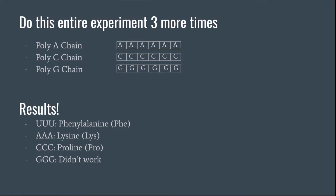With these three experiments, they found that poly-C chains formed a protein with proline, poly-A with lysine, and poly-G had no success. So, the three codons discovered were UUU for phenylalanine, CCC for proline, and AAA for lysine.